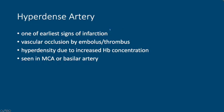So let's talk about the hyperdense MCA sign. It's one of the earliest signs of infarction that we can find on CT — we don't have to wait six to eight hours to find it. It represents vascular occlusion by an embolus or a thrombus. We typically see this proximally within the middle cerebral artery, either the M1 or the proximal M2 segments. The hyperdensity within the artery is actually related to increased hemoglobin concentration from an actual clot.